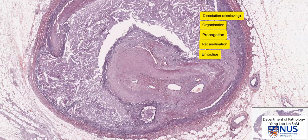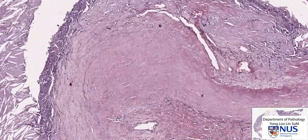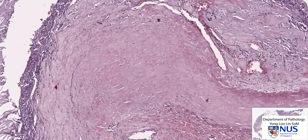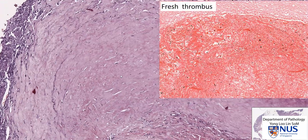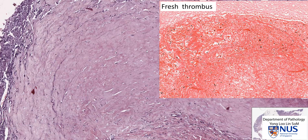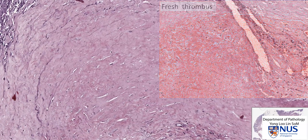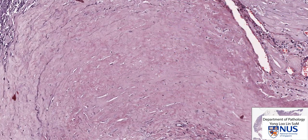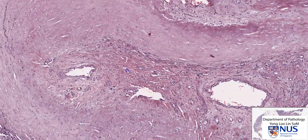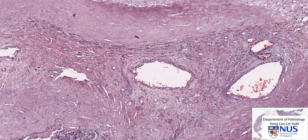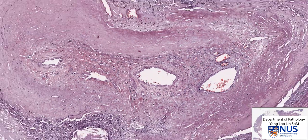Here we are looking at organization — an organized thrombus. How we know it's organized is when we look at higher magnification we don't see the appearance of a fresh thrombus, which is a lot of red blood cells and fibrin strands. Instead, we see this thicker, bundly-looking collagen pinkish material. This is fairly mature collagen, laid down by fibroblasts, and we see in some areas a little attempt at reforming the lumen of this original artery.